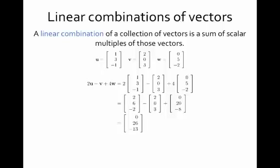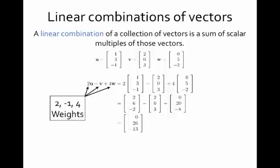You can see the arithmetic that takes place right after the first equal sign: I'm replacing u, v, and w with their vectors, doing the scalar multiplication in the next line by multiplying each entry of every vector by its scalar, and then adding the results. The 2, the negative 1, and the 4 — the scalars we're multiplying by — have an important role. We call those the weights; they're the numbers that we are weighting those vectors by before adding them.